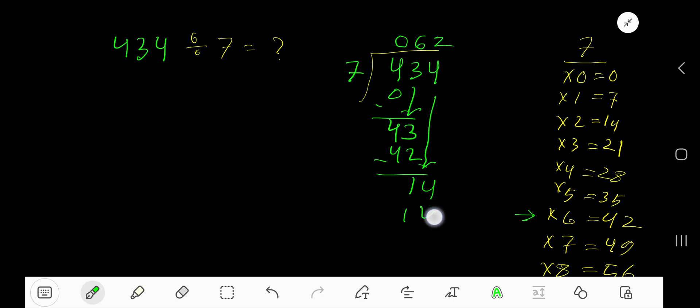Write 2. 2 times 7 is 14. Subtract, your remainder is 0. As your remainder is 0, so we are done. Our answer is 062, means 62. 62 is our answer.